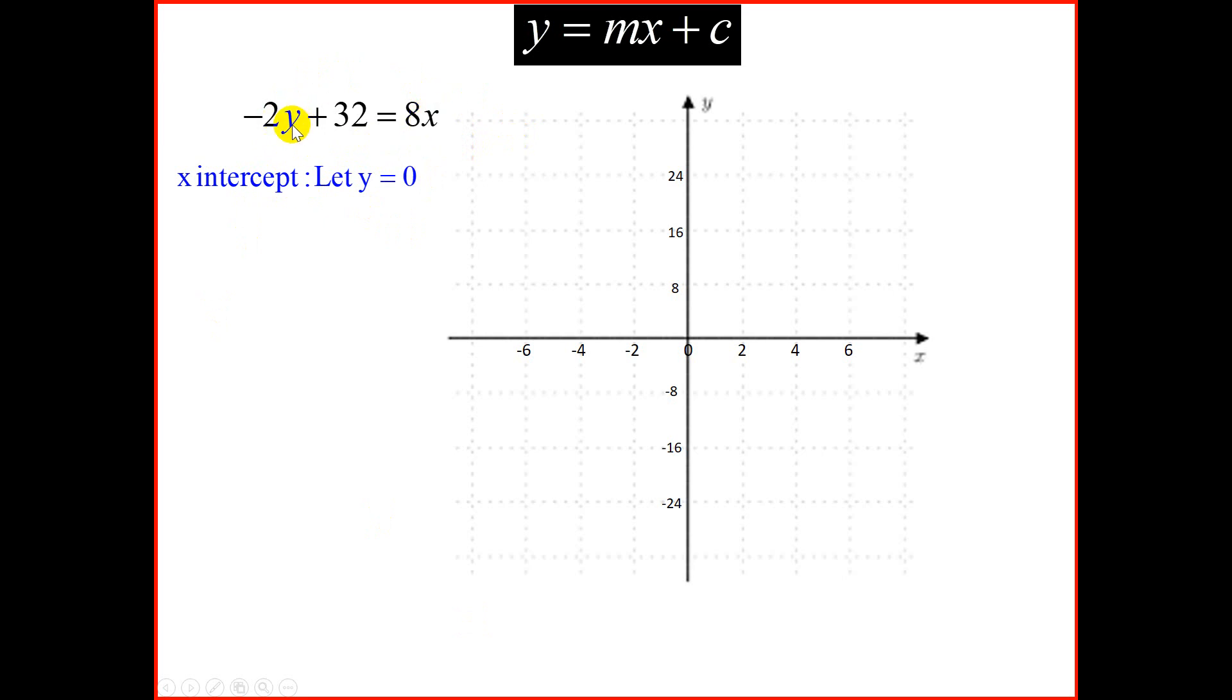And if we let y to be 0, minus 2 times 0 is 0. So we're going to end up with 32 is equal to 8x. This entire part would be 0. Dividing both sides by 8, we get x to be 4. Now, you'll notice that I've scaled the x-axis, and you'll notice here that I've actually marked them for every centimeter is represented by 2. So at x is equal to 4, we'll place our first dot.